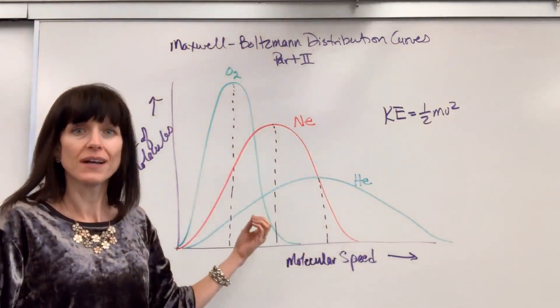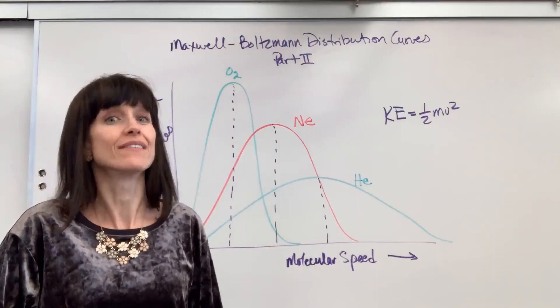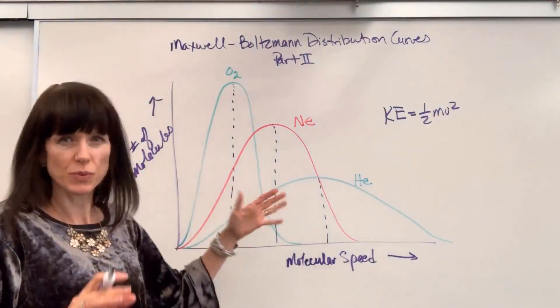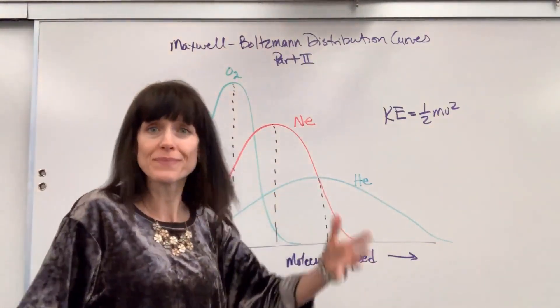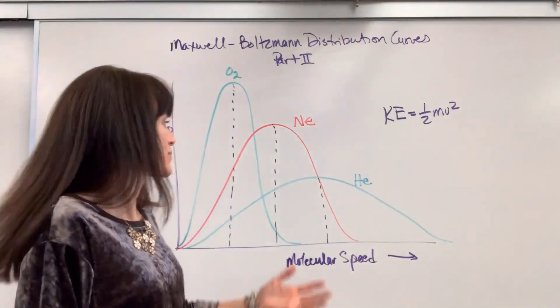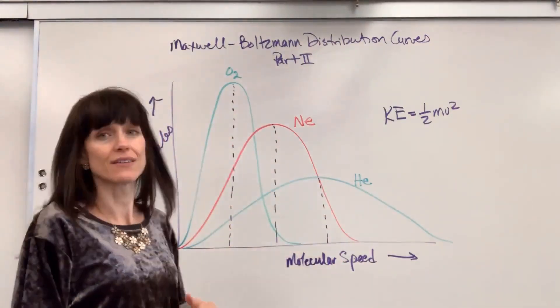At a given temperature, all of those gases have the same kinetic energy. So that's where this is coming from. Of course, the helium, with a smaller mass of four, is going to go faster than the oxygen at a molar mass of 32.